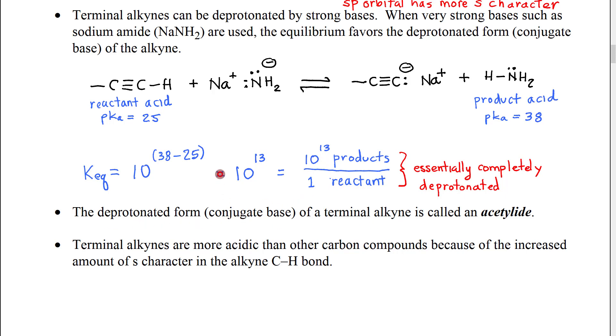The deprotonated form of the terminal alkyne, that would be this species right here, is called an acetylide ion. So this derives from acetylene,